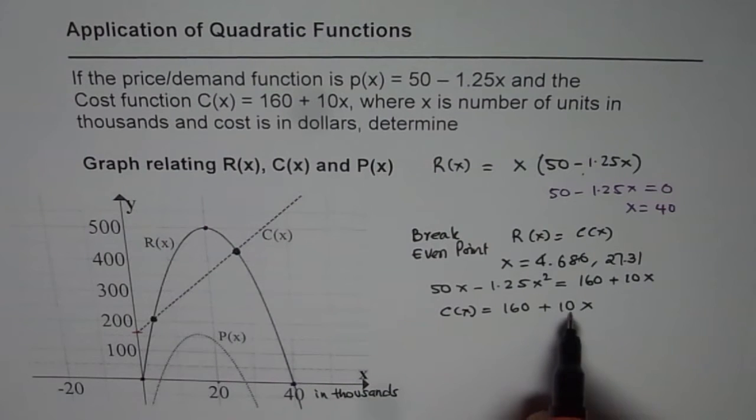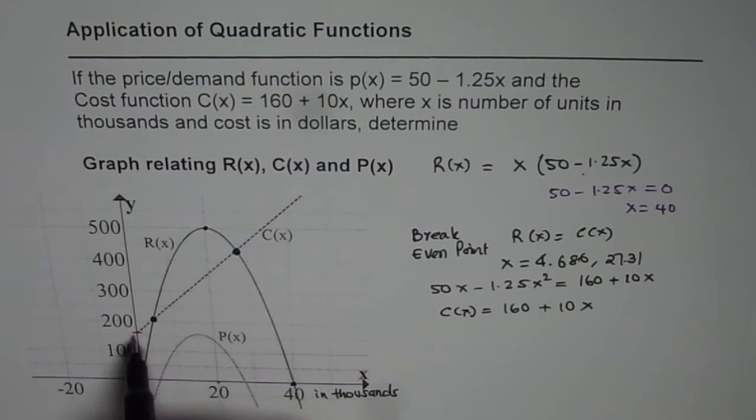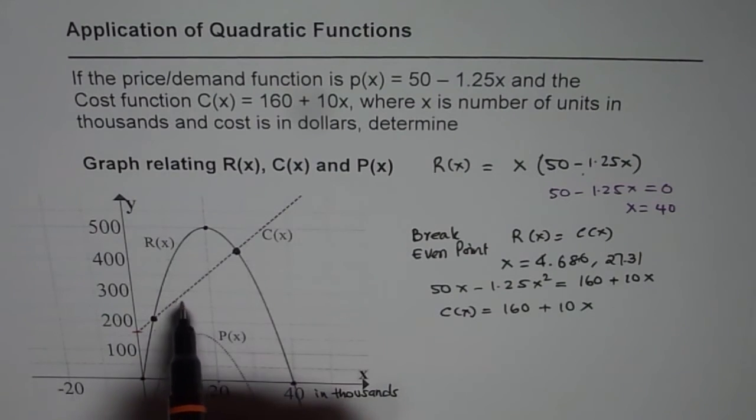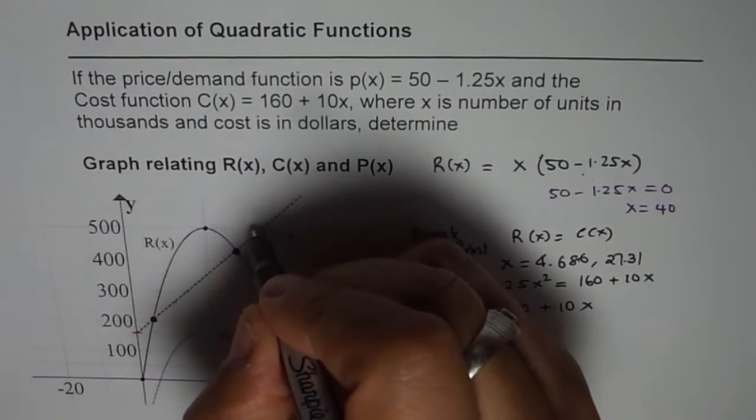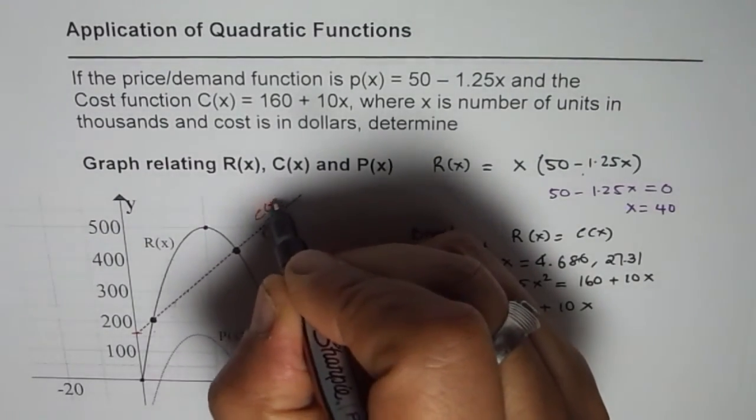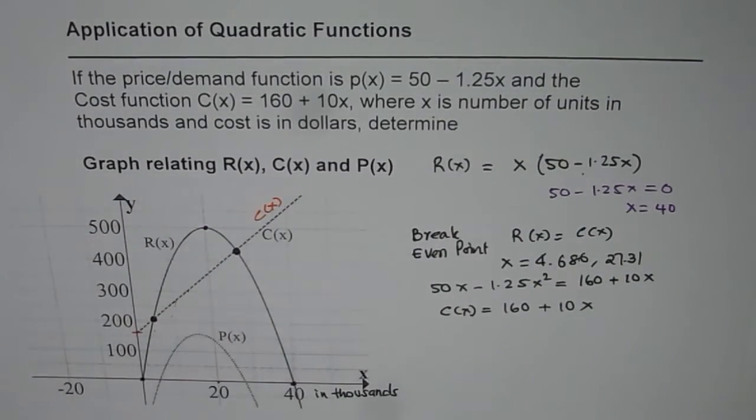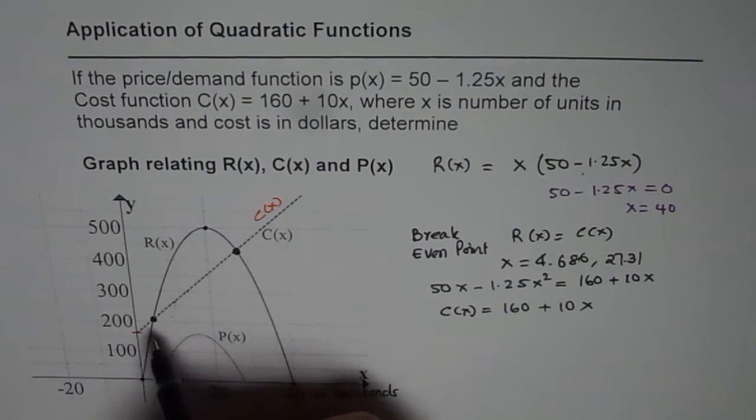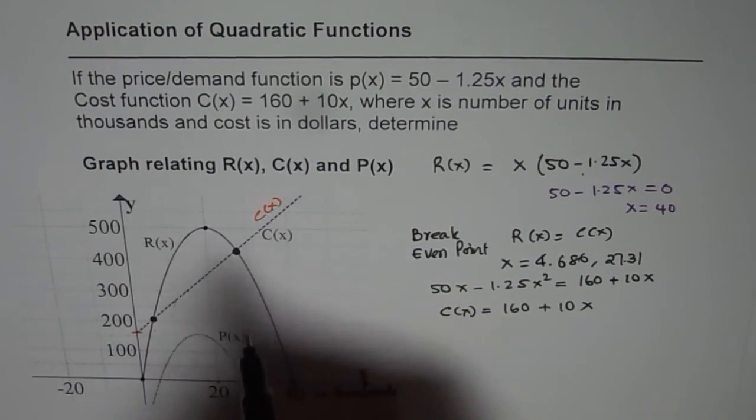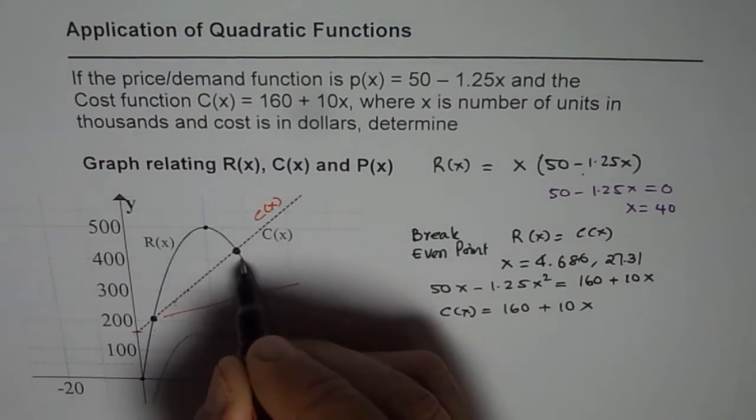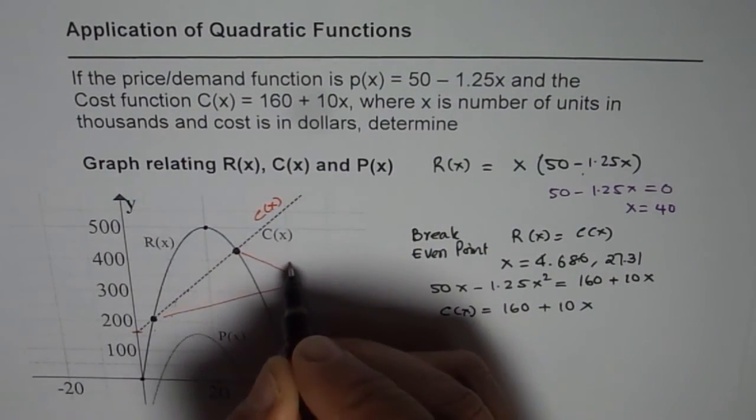We start with the y-intercept which is 160, slope is 10, so for each unit you go up by 10. Then you make this line, you sketch this line so that line gives you cost function C(x). Wherever this line crosses the parabola, which crosses these two points, these are called the break-even points.